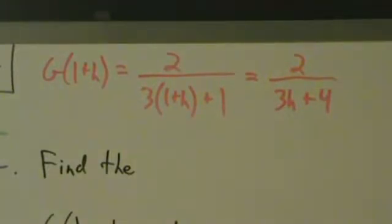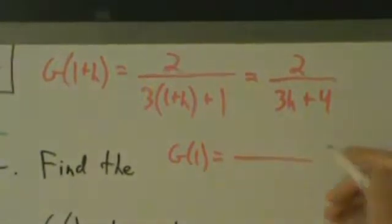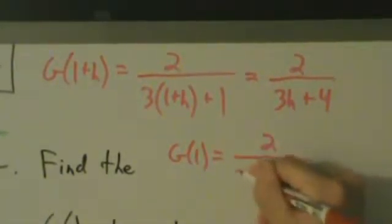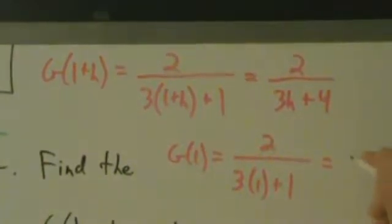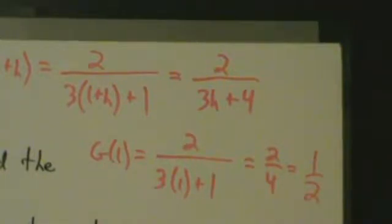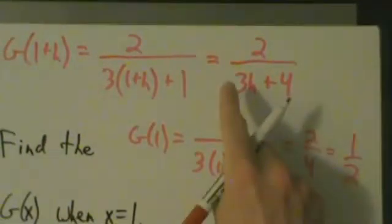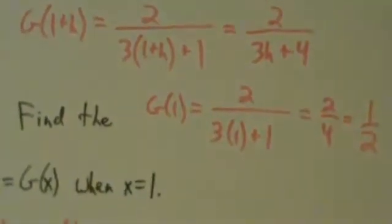Now, how about just G(1), so that'll be a little bit simpler. G(1) = 2/(3·1 + 1), which is just 2/4, or in other words, 1/2. So G(1+h) is 2/(3h+4). G(1) is 1/2. Let's go ahead and put those in here.